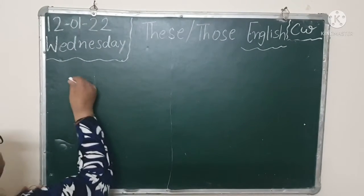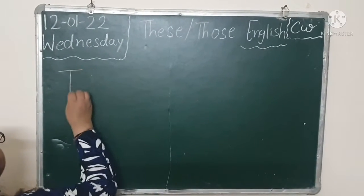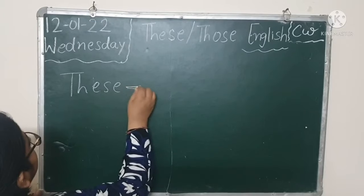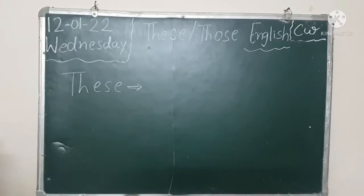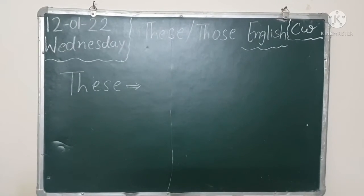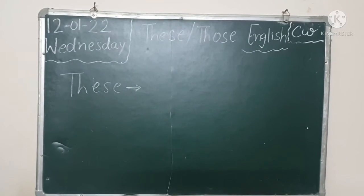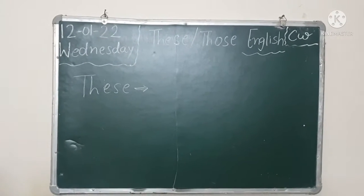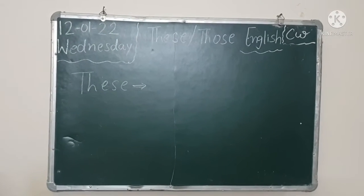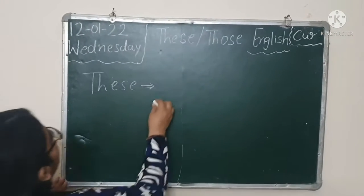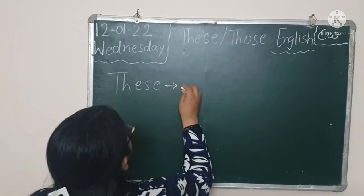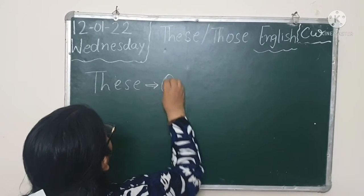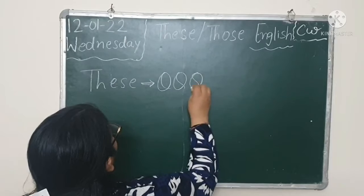We use 'these' for near objects. When the objects are near to us, we use 'these'. ہم these کب use کرتے ہیں؟ جب کوئی بھی object ہمارے near ہوتا ہے. Clear?